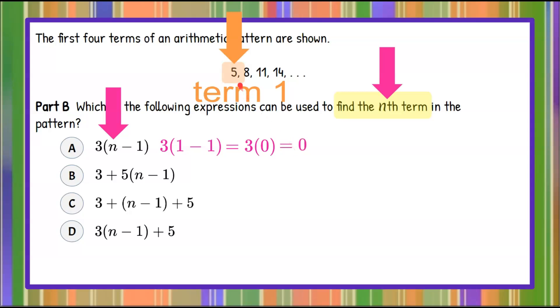Well, that is not equal to 5. So I know that choice A cannot represent finding any nth term of this arithmetic pattern.